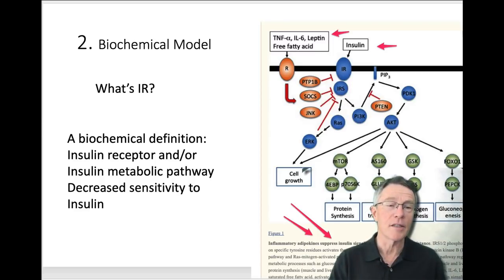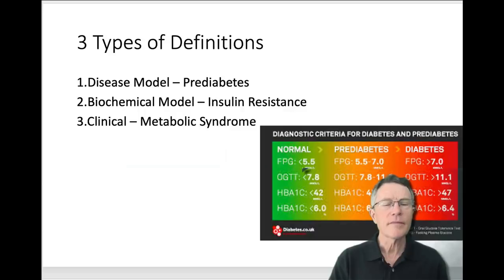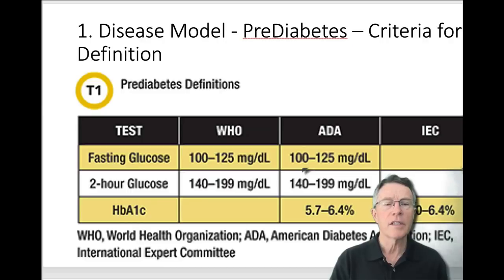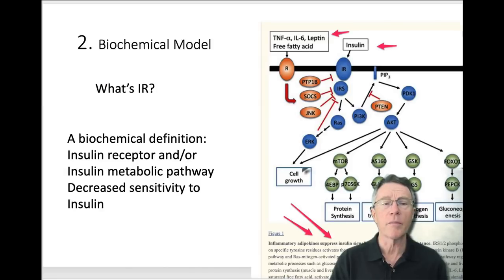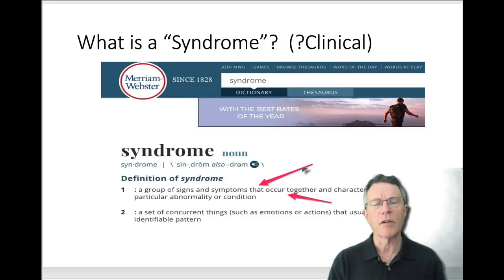Three models: disease model, pre-diabetes; biochemical model, insulin resistance; clinical model, metabolic syndrome. We've covered the disease model with pre-diabetes and the biochemical model with insulin resistance. Now the clinical model — syndrome. What does syndrome mean?